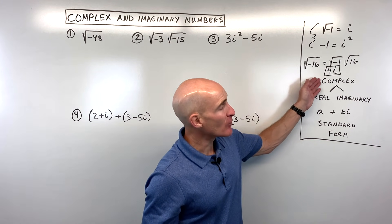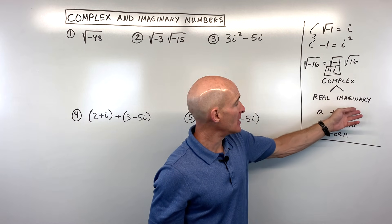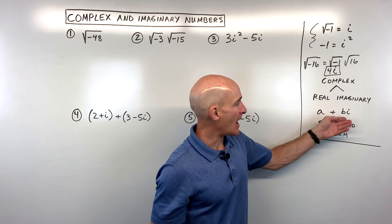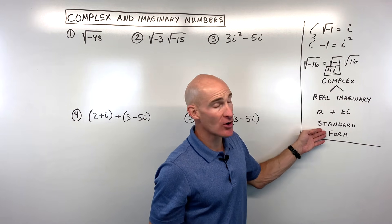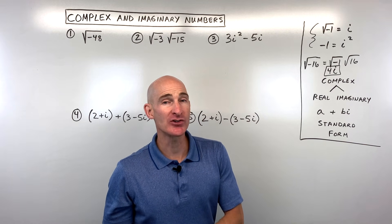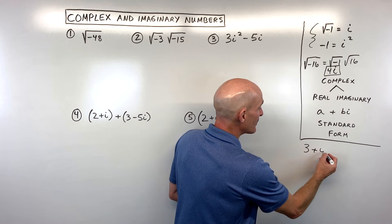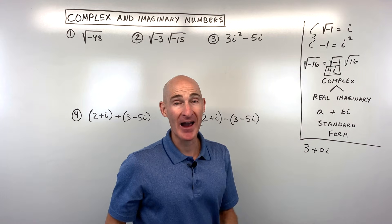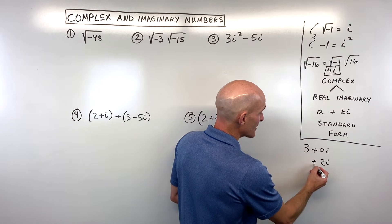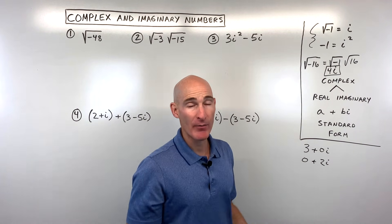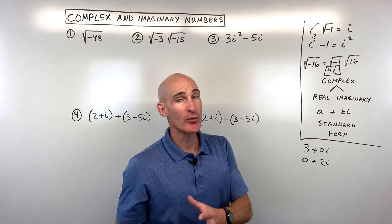A complex number is part real and part imaginary. It's often written in the a plus bi form, where a represents the real part and bi represents the imaginary part — this is called the standard form of a complex number. So all these years, when your teacher said three, it was implied to be three plus zero i, with no imaginary part. Or if you say two i, it's really zero plus two i, but we don't usually write the zero. A complex number is part real, part imaginary.